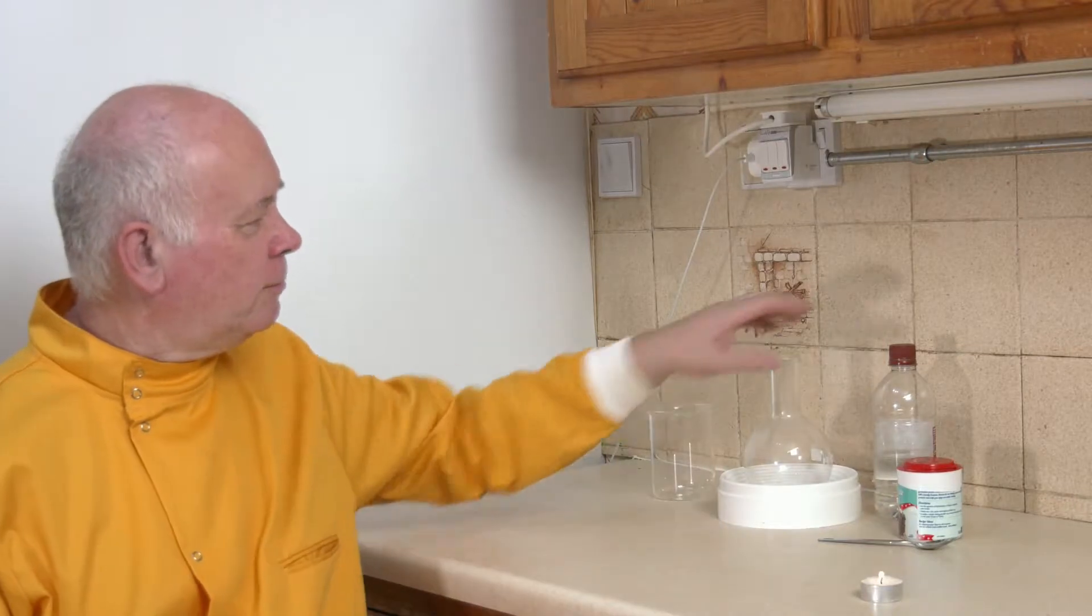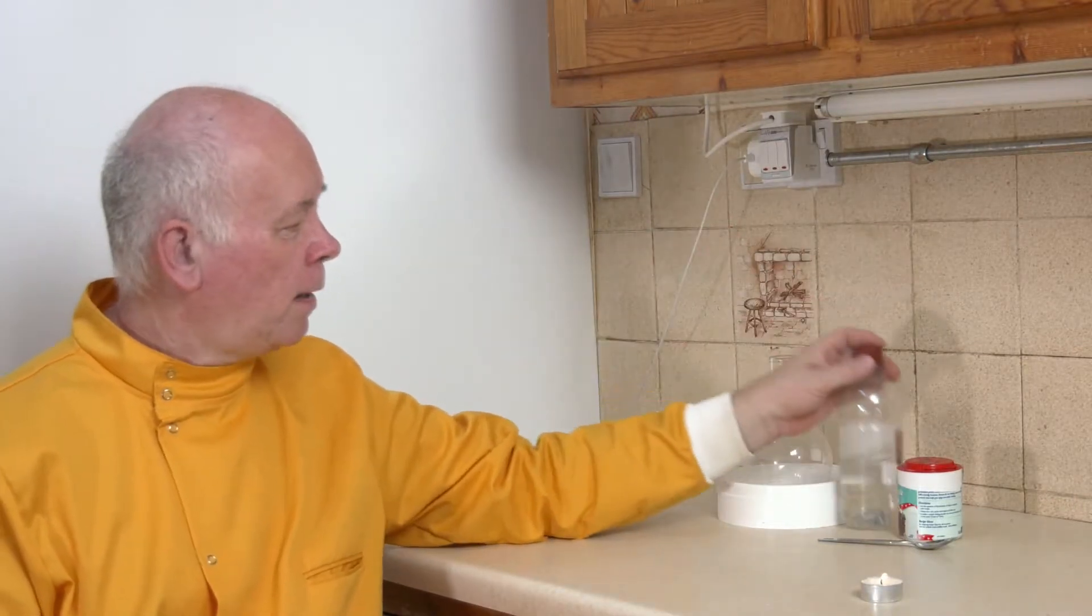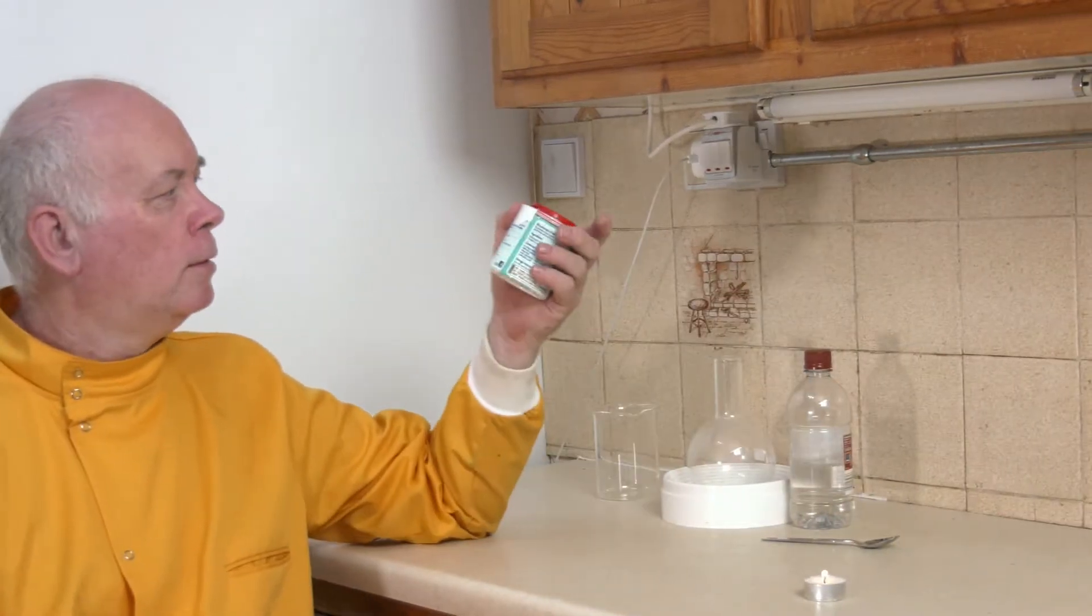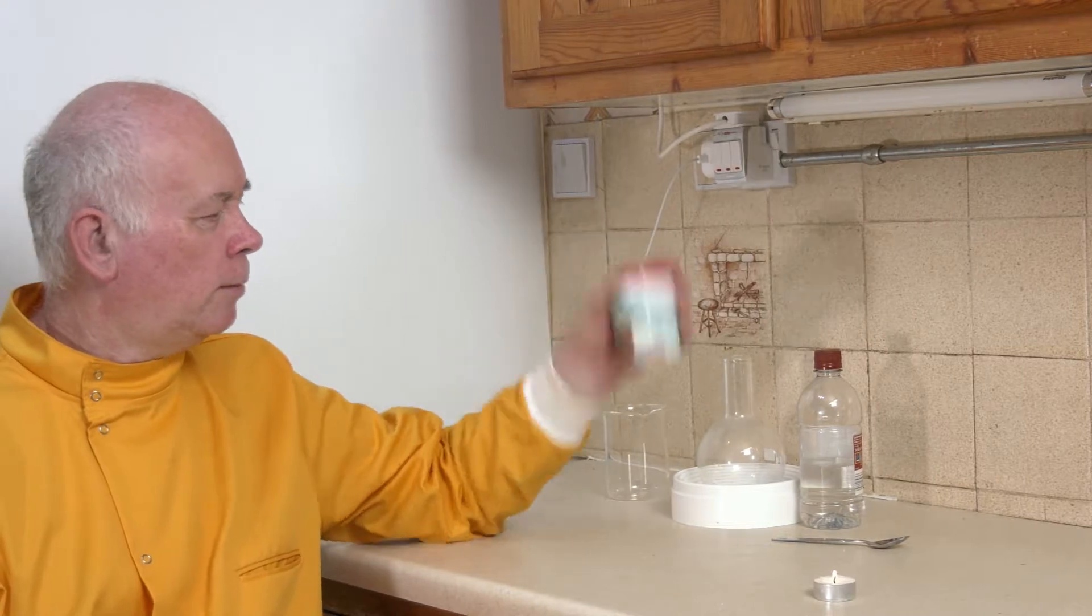We're going to make a CO2 fire extinguisher, and for this you need various simple things you'll find in the house. We need some vinegar, and we need some sodium bicarbonate, or sometimes called bicarbonate of soda.